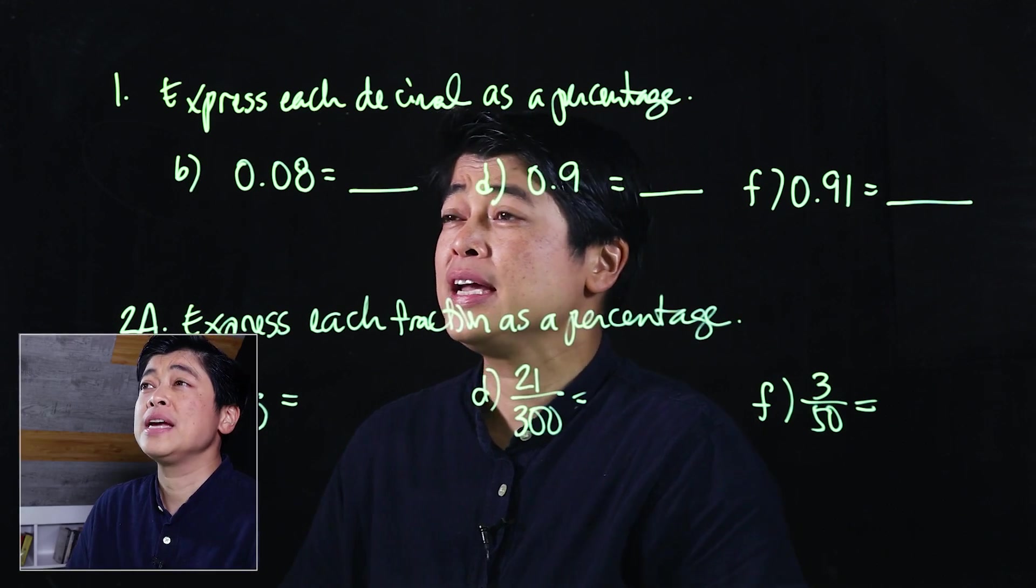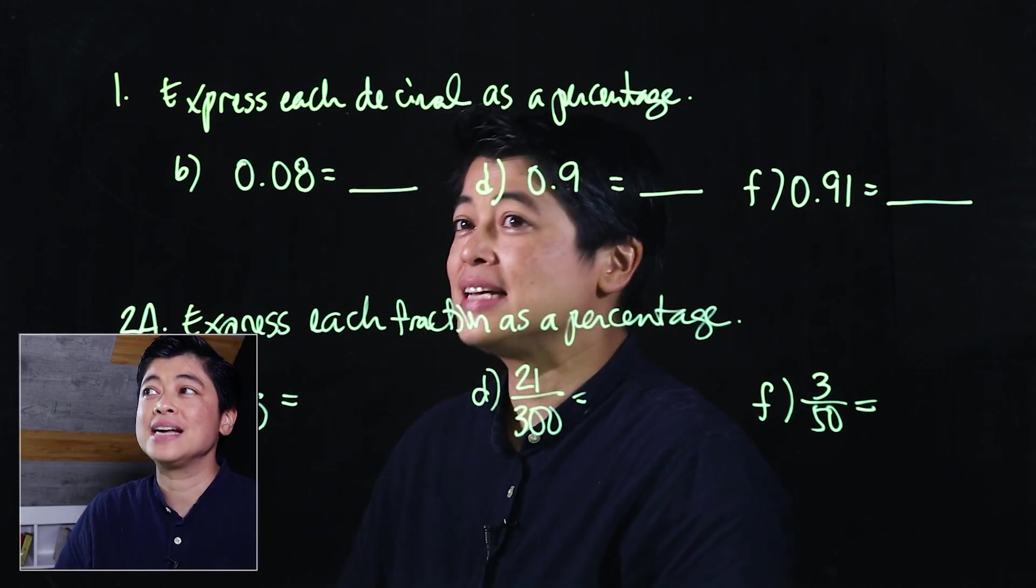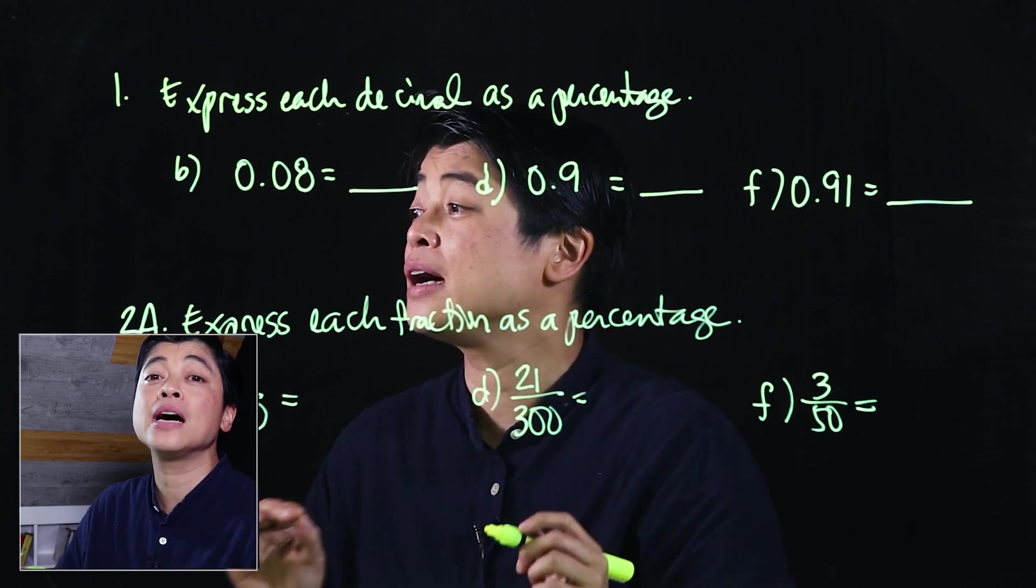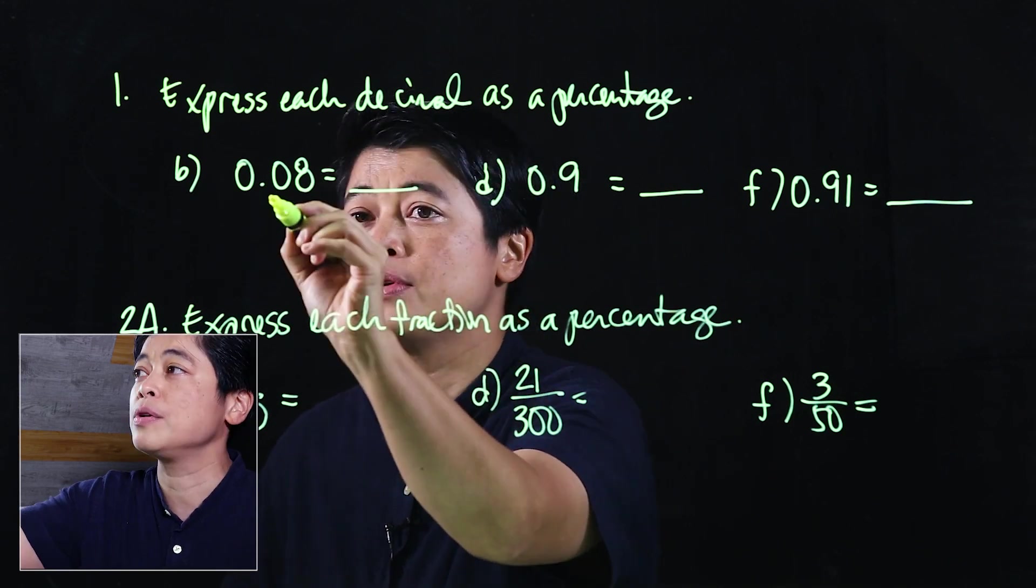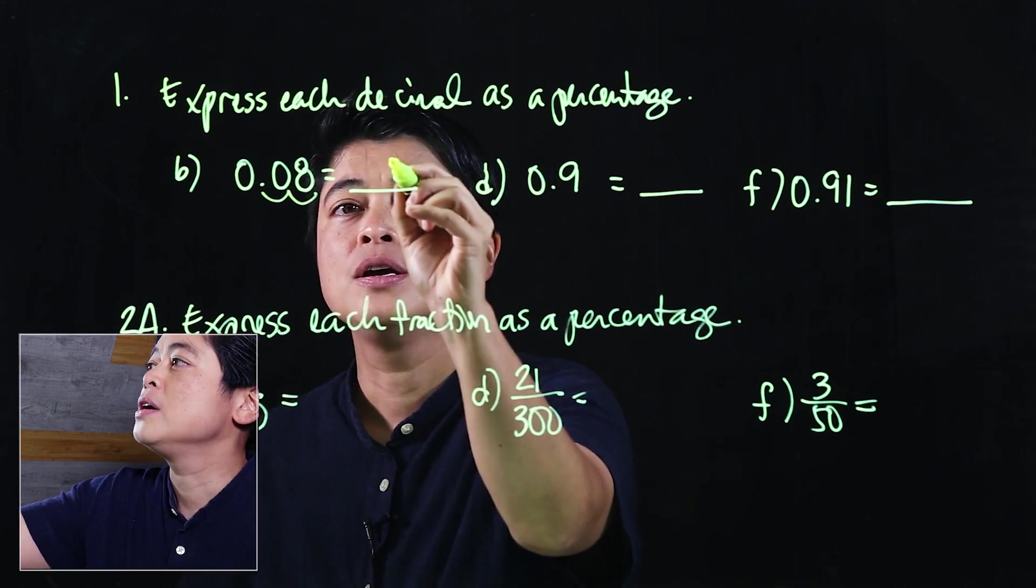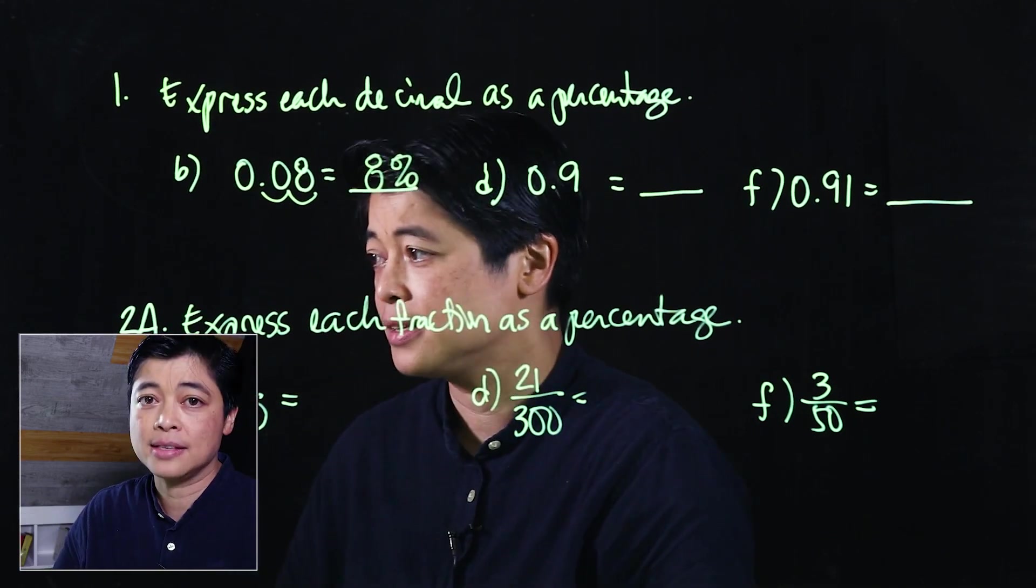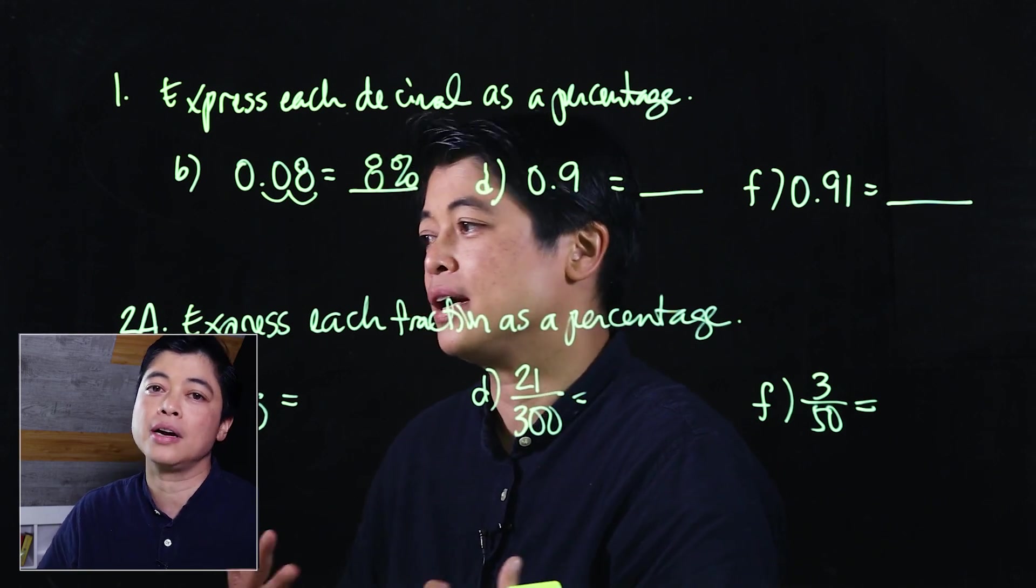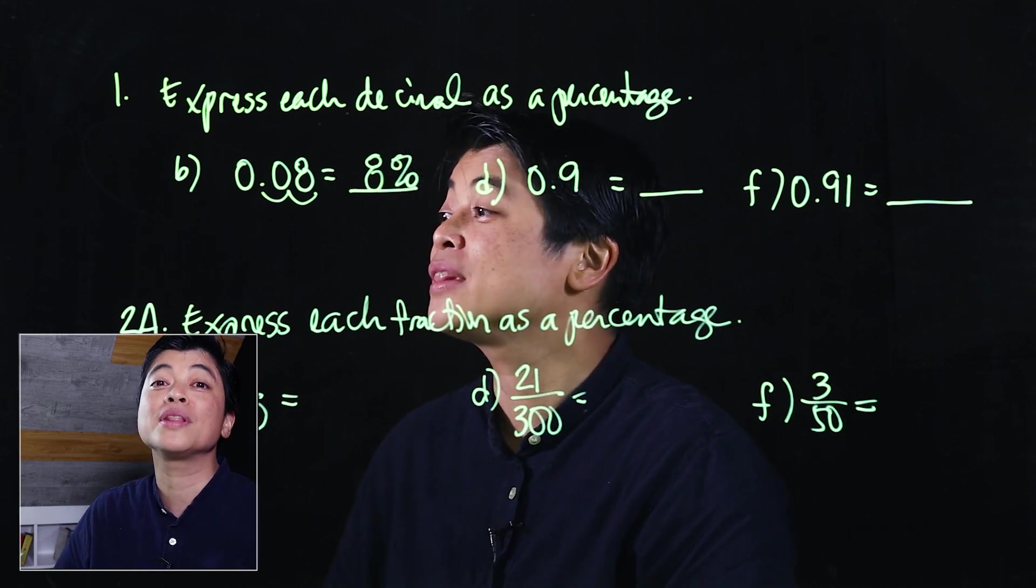In problem number one it says express each decimal as a percentage. Since we have a decimal and we want to make it a percent, we move the decimal two places to the right. When we move two places to the right we get 8, and then we add on the percent. The book has a long version explaining it, we'll just do the simple method - just move and then put the percent sign.